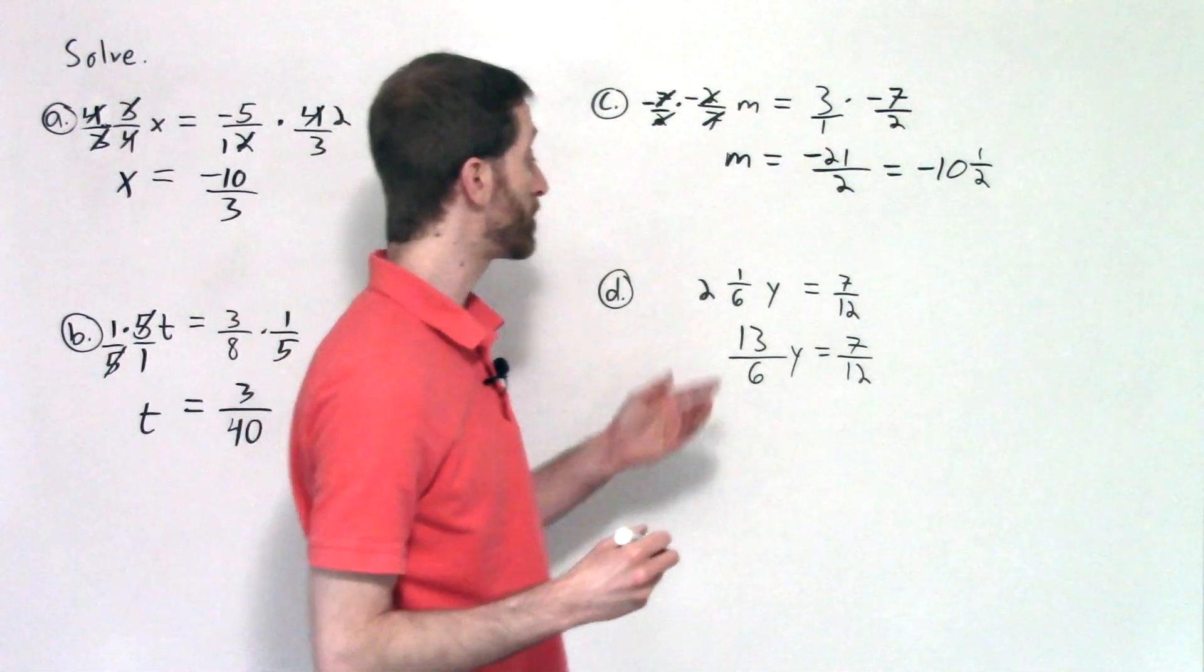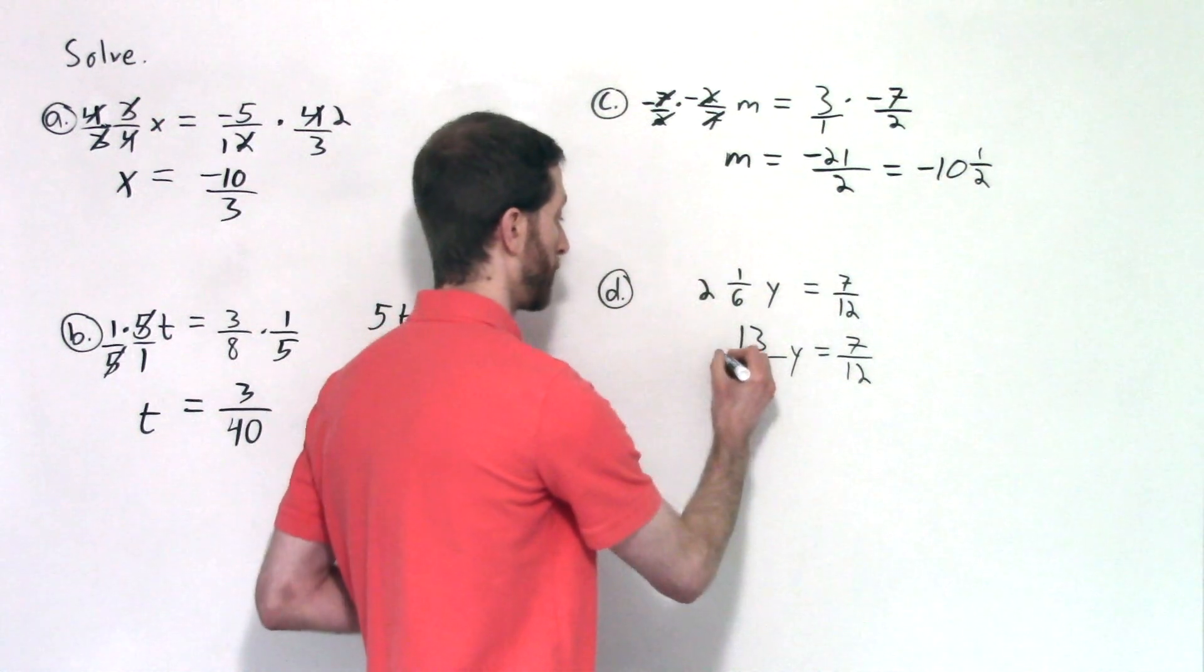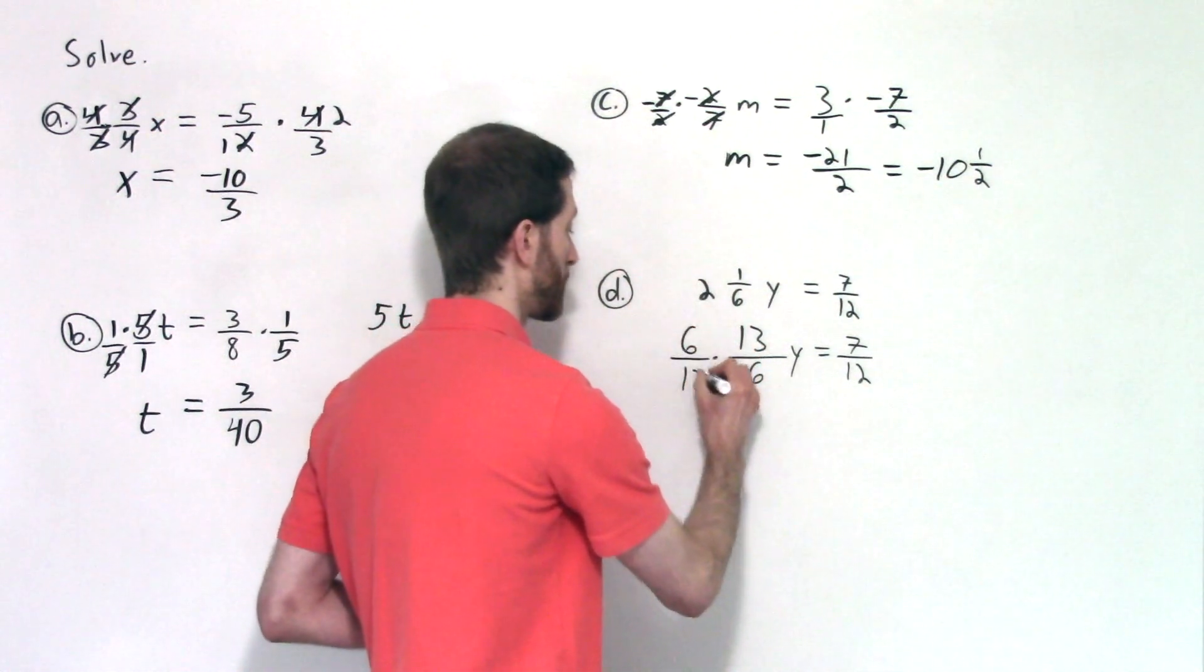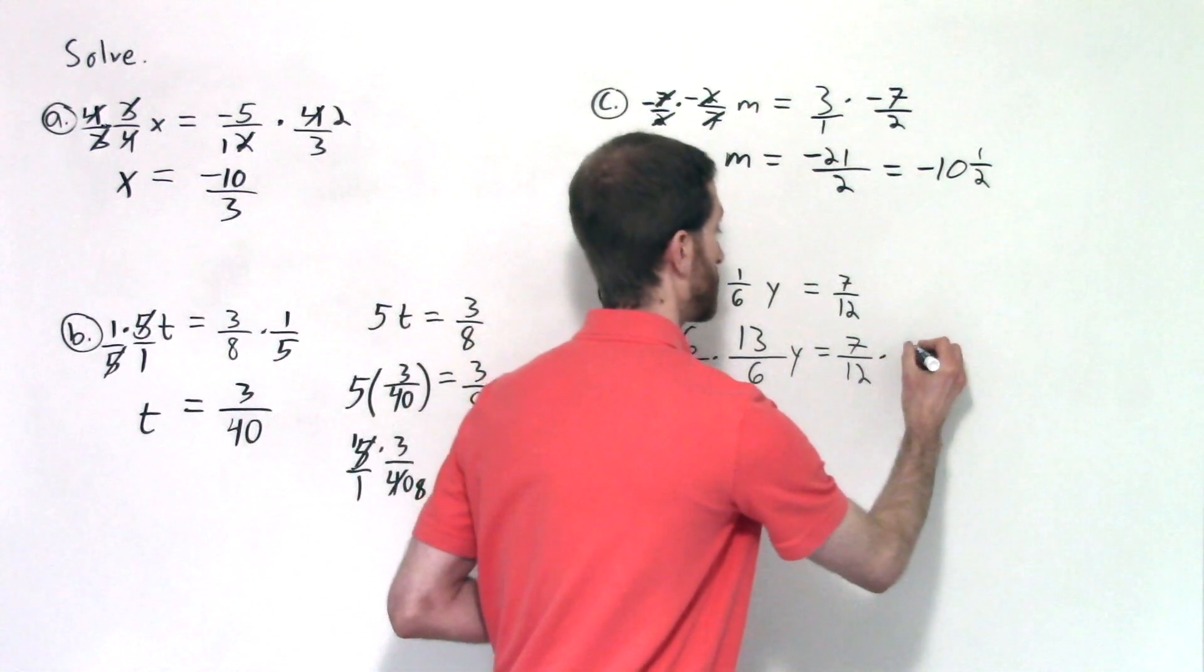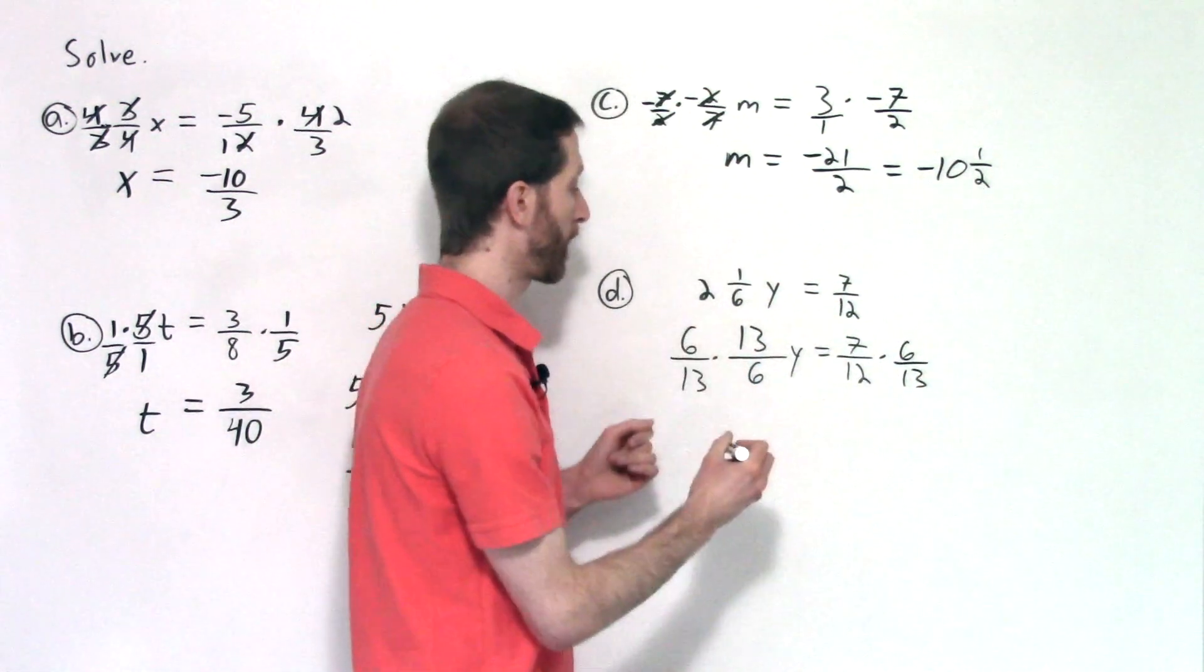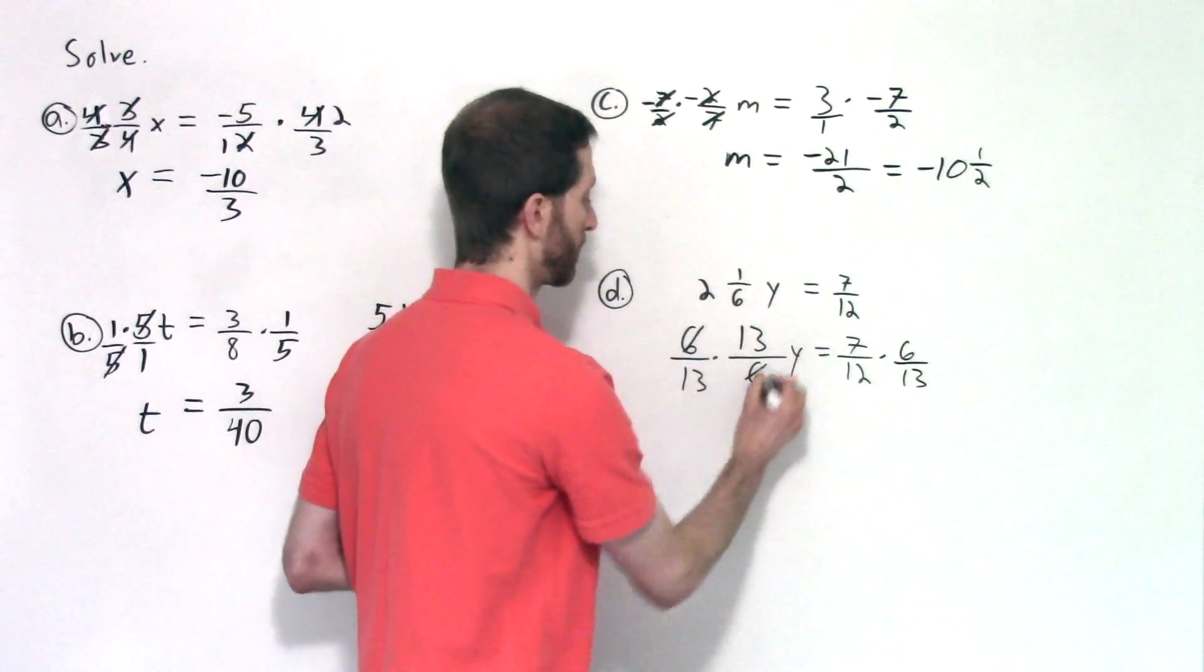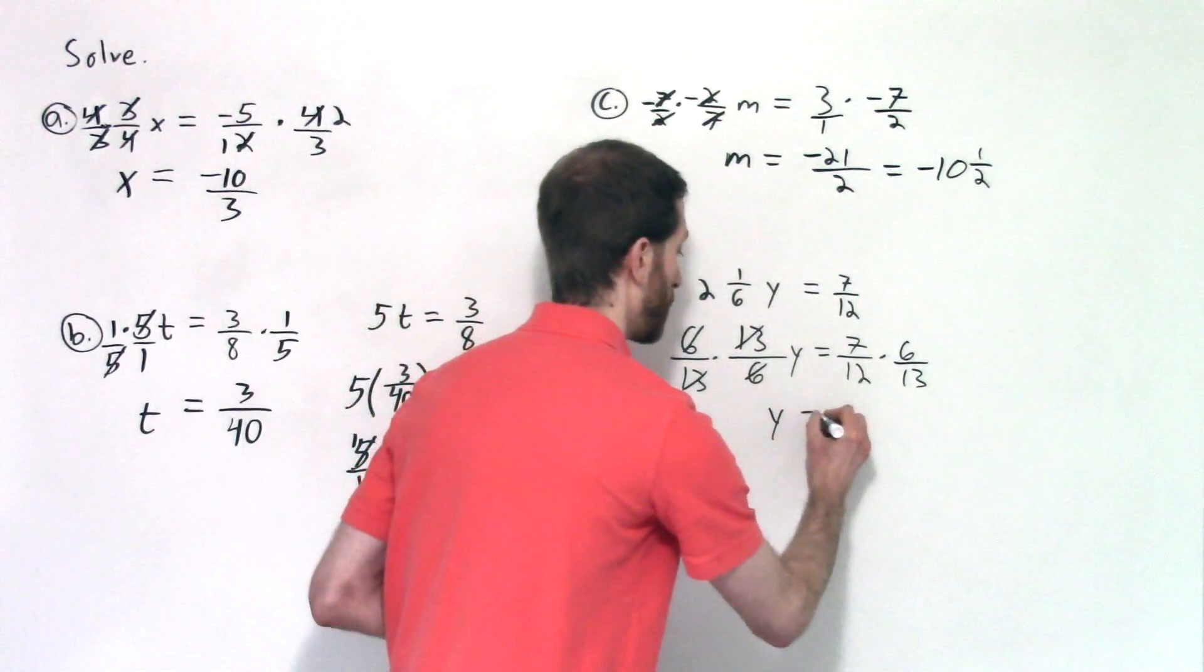And of course, what I do to one side of the equation, I must do to the other. So I'm going to multiply both sides by six over 13. Now first, let's verify that we got y alone. Sixes divide out, leaving us with one. Thirteens divide out, leaving us with one. So we're left with just y equals.